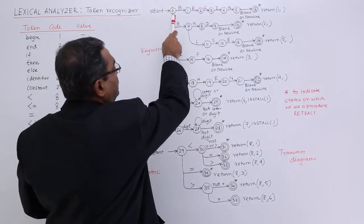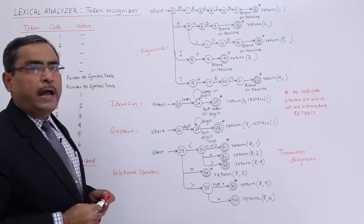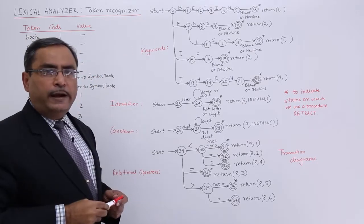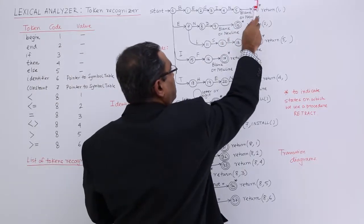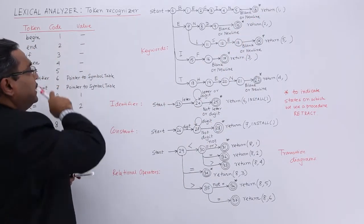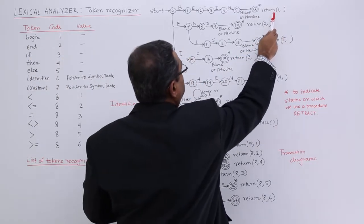Start state 0, BEGIN, and after that if I get any blank or newline as a delimiter, then 6 will be the final state and return 1. Why return 1? Because begin means I shall be returning 1, so that will be the code value.